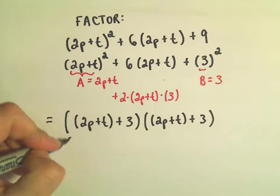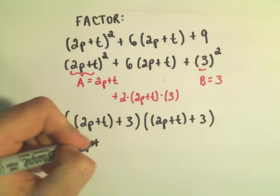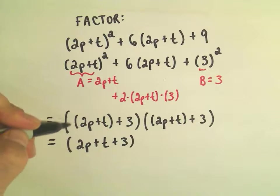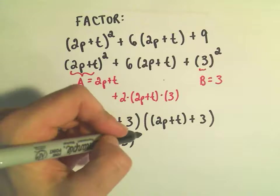And in this case you could drop the parentheses on the inside, 2p plus t plus 3. You can think about there as being a coefficient of positive 1, so if you multiply it out it just gets rid of it.